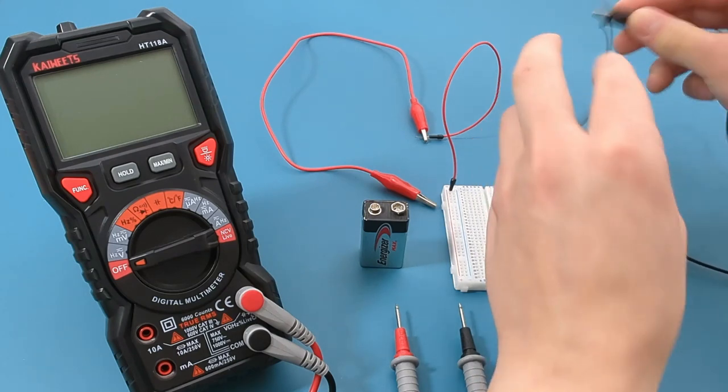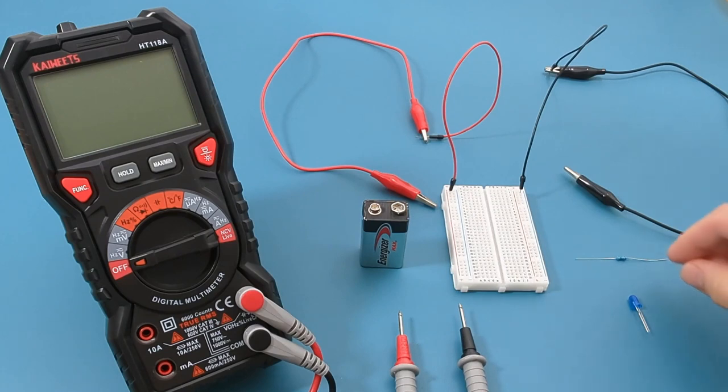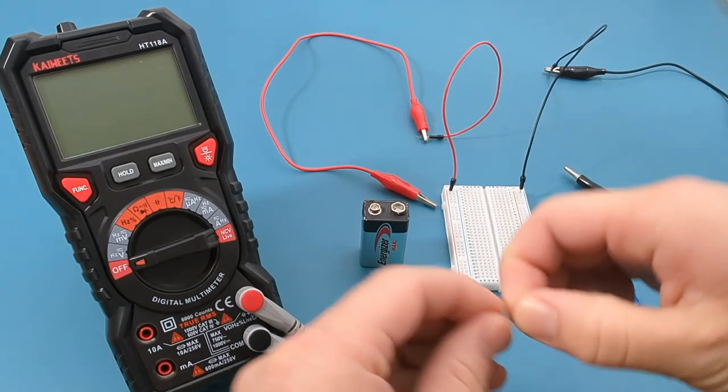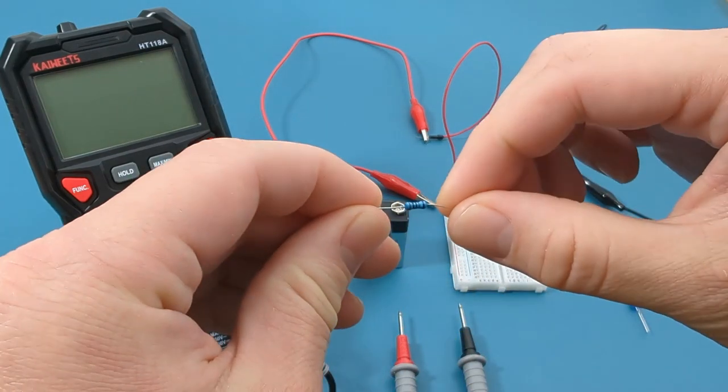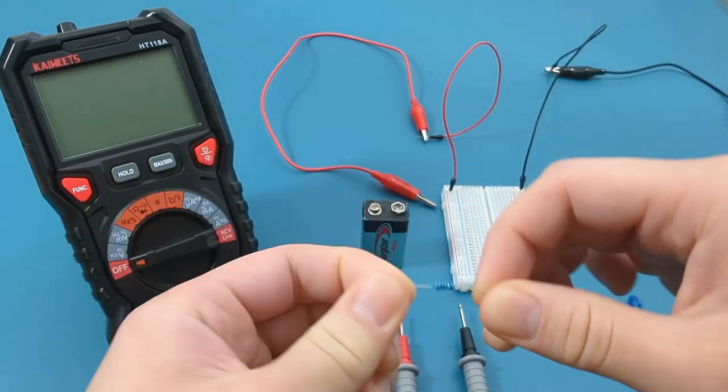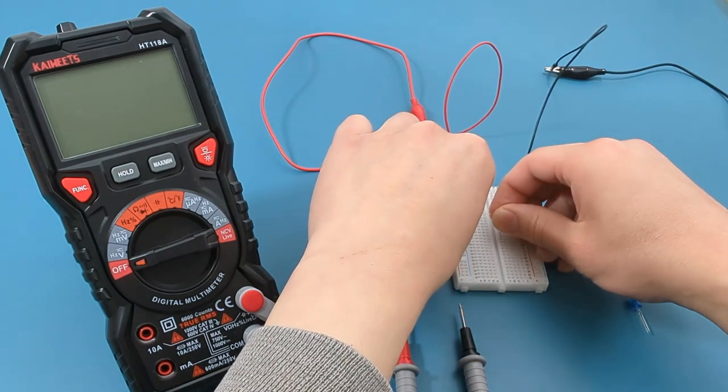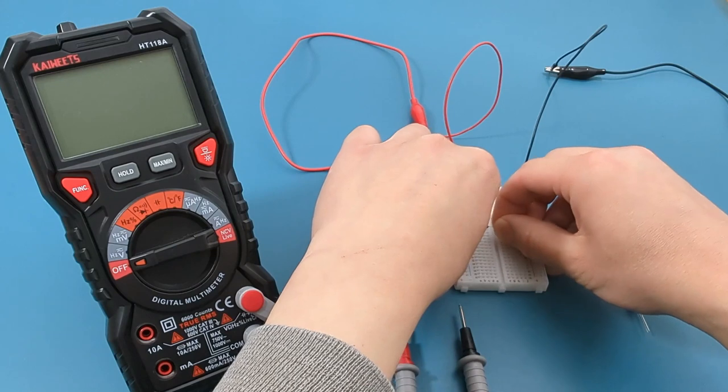I am holding a 300 ohms resistor. Please watch my other video mentioned in the description to understand how I arrived at this value. Insert the resistor into the breadboard.